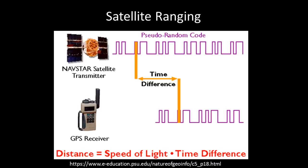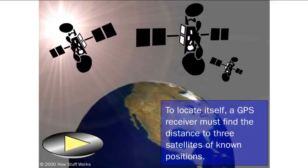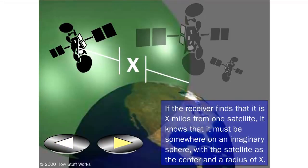To locate itself, a GPS receiver must find the distance to three satellites of known positions. If the receiver finds that it is x miles from one satellite, it knows that it must be somewhere on an imaginary sphere, with the satellite as the center and a radius of x.